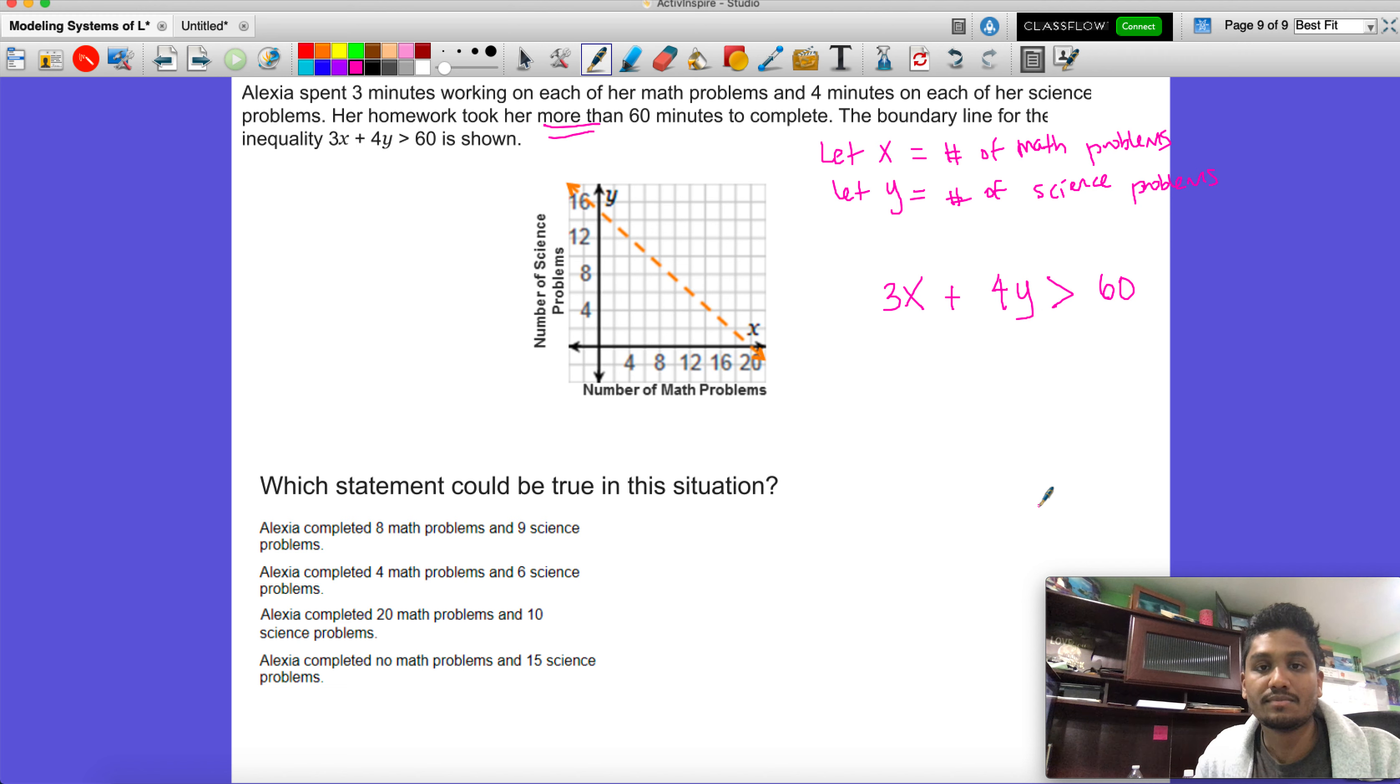We have this boundary line. If you were to put this in y equals mx plus b, then you would be able to graph the line. It's dashed or dotted because this is a greater than sign. It does not have that equal to on the bottom. It says which statement could be true for the situation.